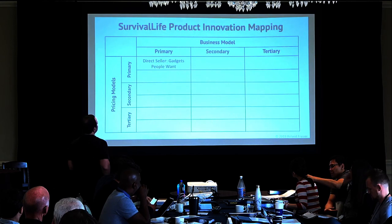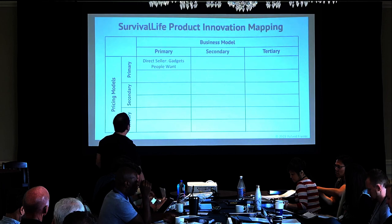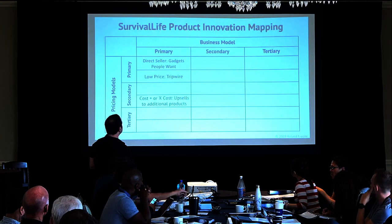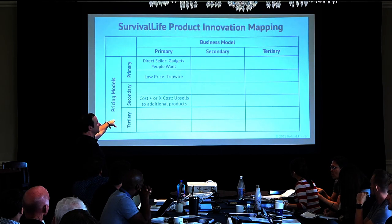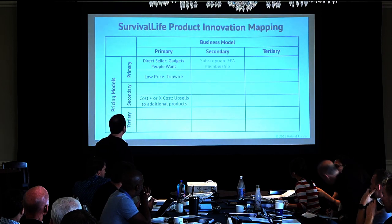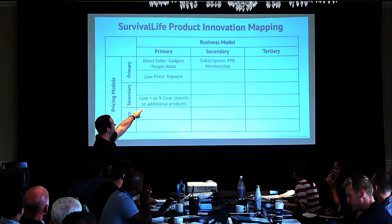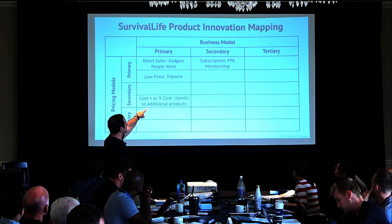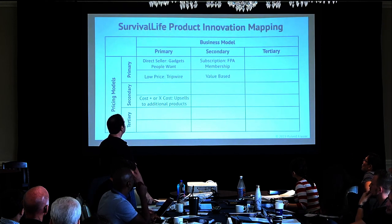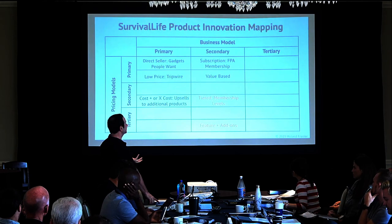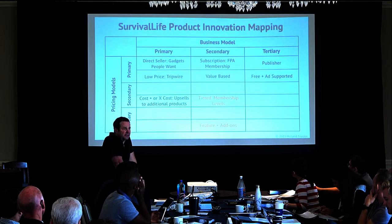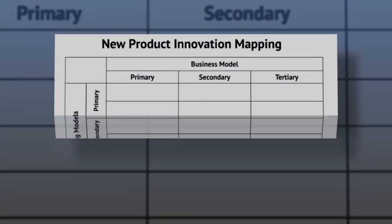For Survival Life, the primary model is direct seller — we sell gadgets people want. Our pricing model is the tripwire: a low-price entry offer that makes people 11 times more likely to take the next offer. The secondary pricing model is cost plus or times cost with upsells for additional products. Our secondary business model is the association — Perry's innovation — building a subscription model on top of any business because people like to be with others like them. That's the FPA membership with value-based and tiered membership levels and features and add-ons. The third model is publisher with free and ad-supported content, selling ads and sponsorships across our websites.